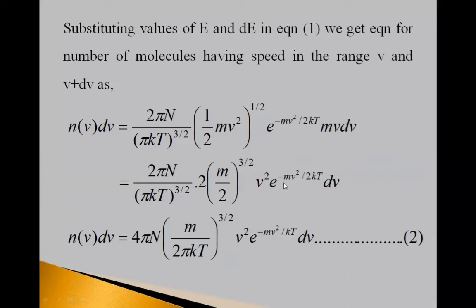So, we get N(v)dv is equal to 4πN into (m upon 2πkT) raised to 3/2 into v square, e raised to minus mv square upon 2kT, dv. Equation second.